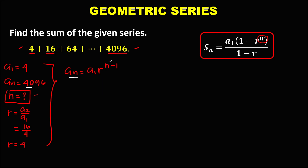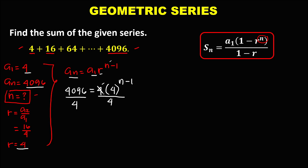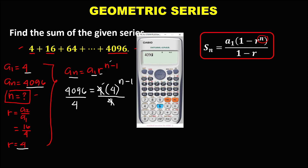So a sub n, the last term: 4,096 equals a sub 1, the first term, that's 4, times the common ratio, that's 4, to the power n minus 1. Then to simplify, divide both sides by 4. Cancel, and 4,096 divided by 4 equals 1,024.